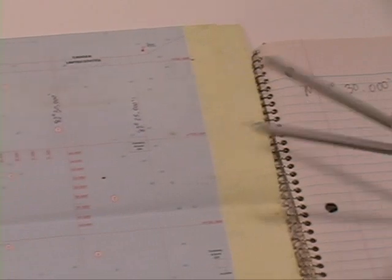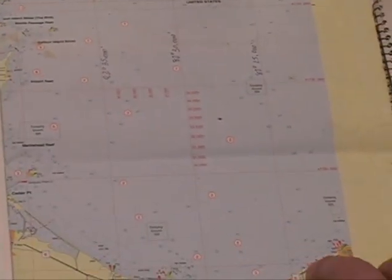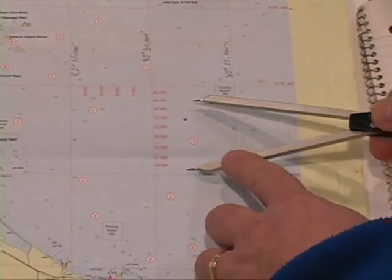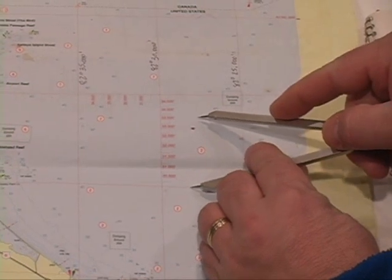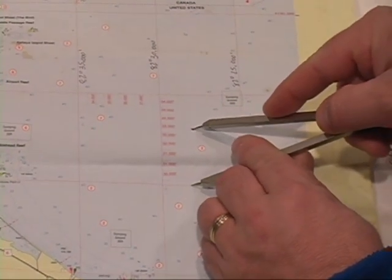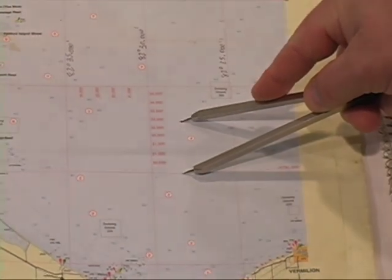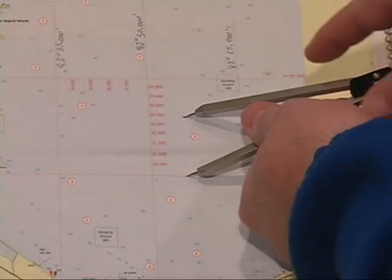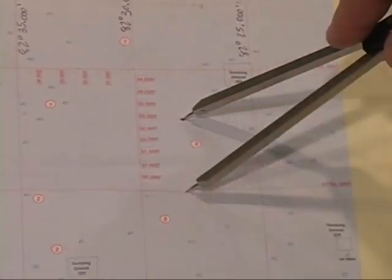So now I take my dividers and I'm going to measure the distance from my known latitude to my unknown latitude or what the latitude is going to be of my point I want to determine. Now, one thing that's important is when you measure, always make sure you're measuring at a 90 degree angle.